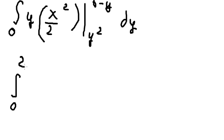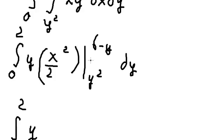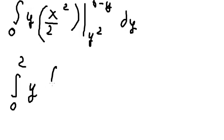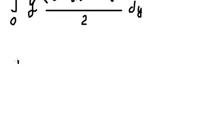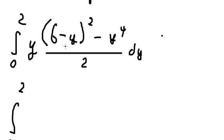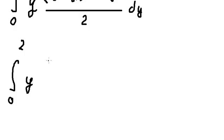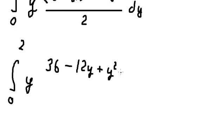Now we calculate the integral of x dx, which gives x squared over 2, evaluated with bounds from y squared to 6 minus y. We substitute 6 minus y and y squared into x squared over 2. The expression becomes: (6 minus y) squared over 2 minus y to the power of 4 over 2. Expanding gives 36 minus 12y plus y squared, minus y to the power of 4, all over 2.